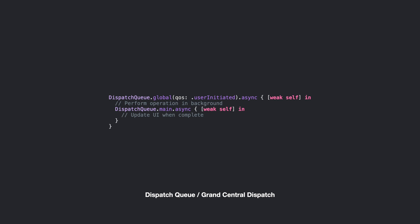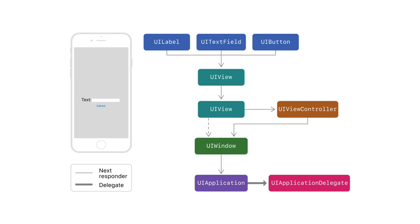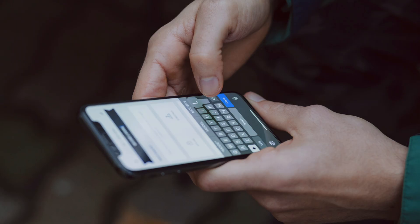What is the responder chain in iOS? iOS handles all user interaction — whether it's a touch event, a press event, or a shake — through something called the responder chain. The responder chain is simply all of the classes that have an opportunity to respond to some user input. If an object can't handle the event it passes it to the next item in the chain, creating a hierarchy of objects equipped to handle user input. For example, if a UILabel or UITextField can't handle a user event it'll pass it to its parent view.